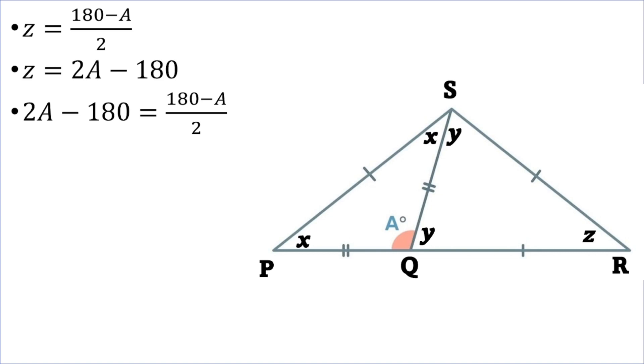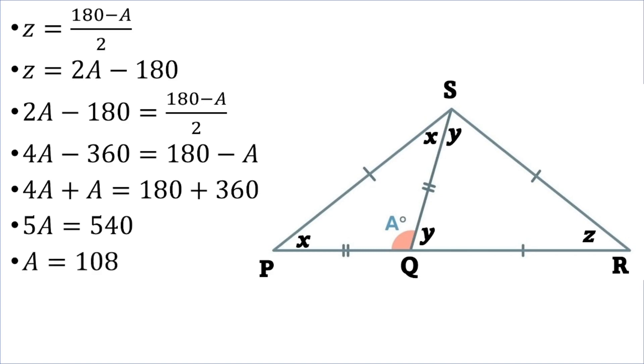When I transpose the 2, I'll multiply and have 4A minus 360 is equal to 180 minus A. Transposing, 4A plus A will be equal to 180 plus 360, which gives me that 5A is equal to 540. So A will be 540 divided by 5, which gives me 108 degrees.